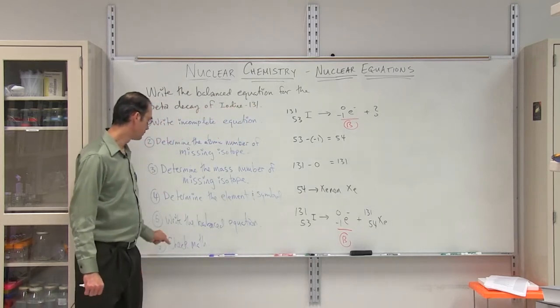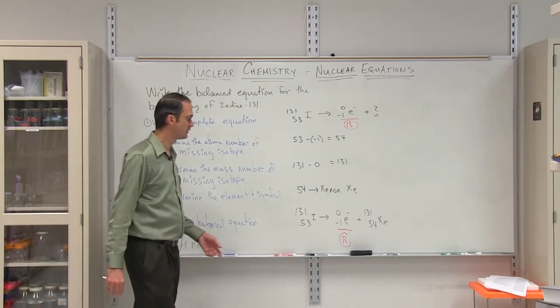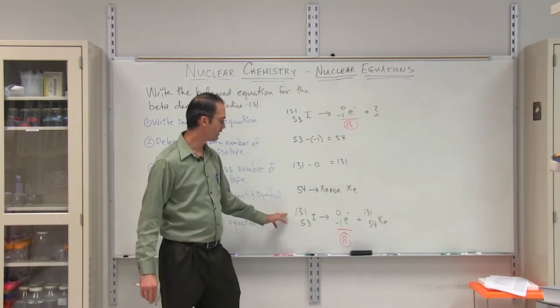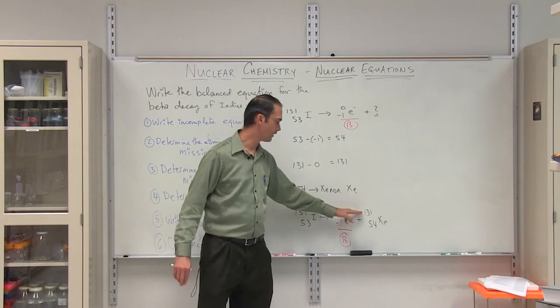And finally, you check the math. Well, let's take a look. 53 minus negative 1 is going to be 54. That looks good. And 131 minus 0 gives us 131.